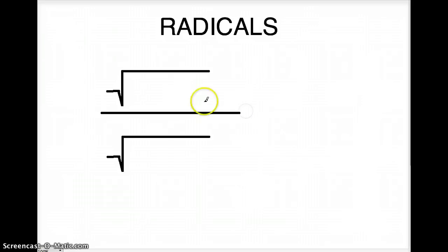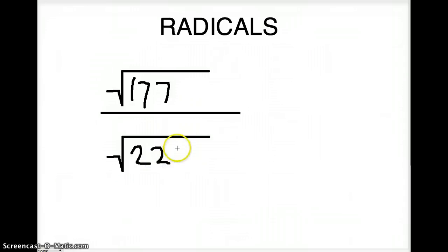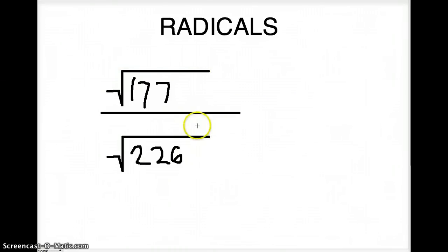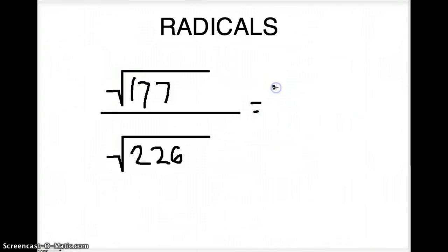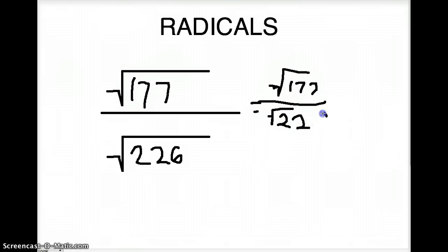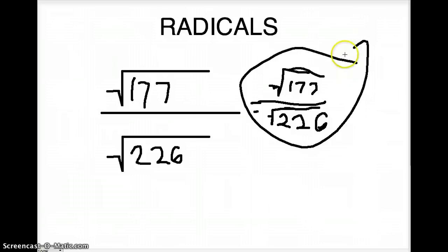What if we did the square root of 177 over the square root of 226? We cannot find any numbers that are the same and multiply to give us a perfect square. So what do we do? We just leave it as the square root of 177 over the square root of 226. If you cannot simplify it anymore, that's okay — you can still have the radical in your answer.